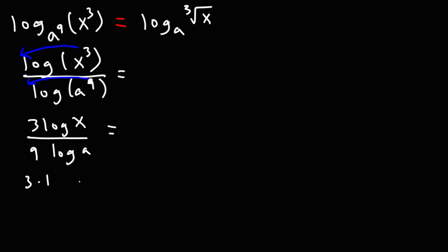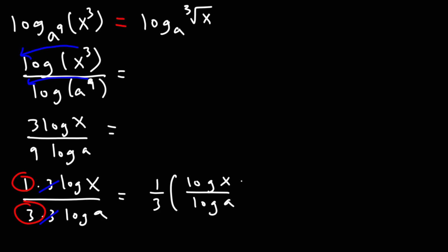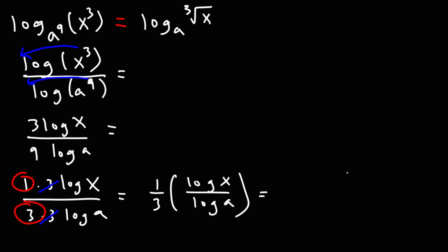Now I'm going to write 3 as 1 times 3, and 9 as 3 times 3. I can then cancel a factor of 3, and I'm left with 1/3 in front. So this becomes 1/3 times log x over log a. Because I have a division of two logs but my final answer needs a single log, I need to use the change of base formula to convert back to a single log.